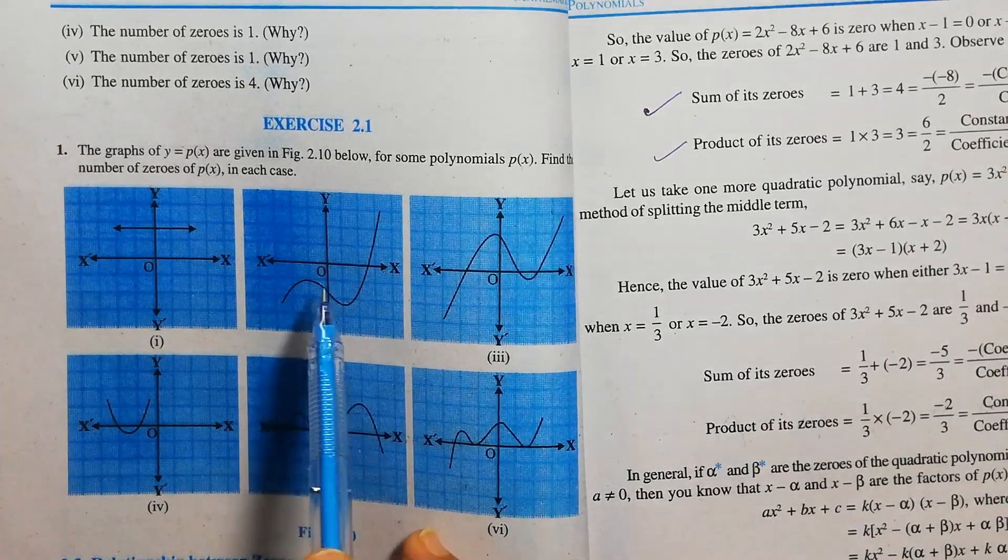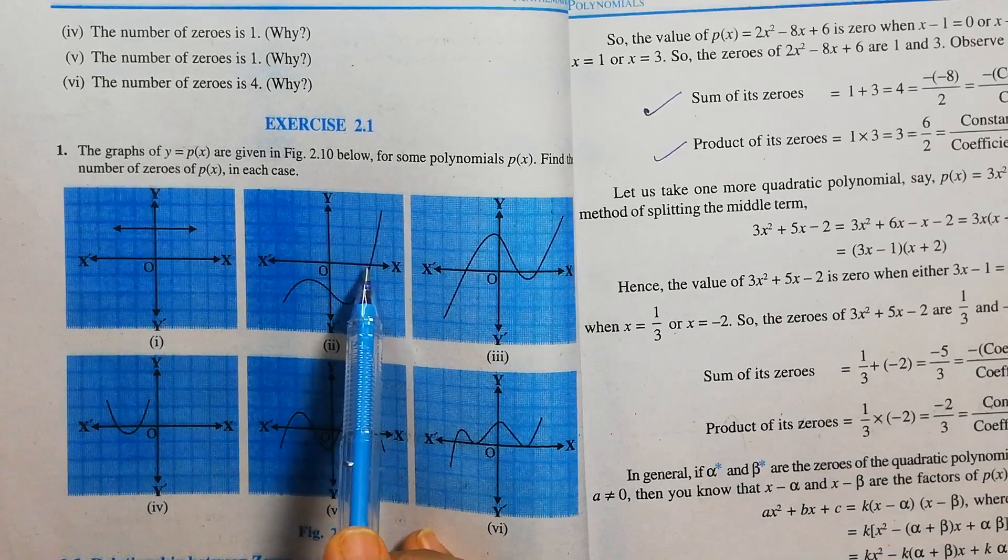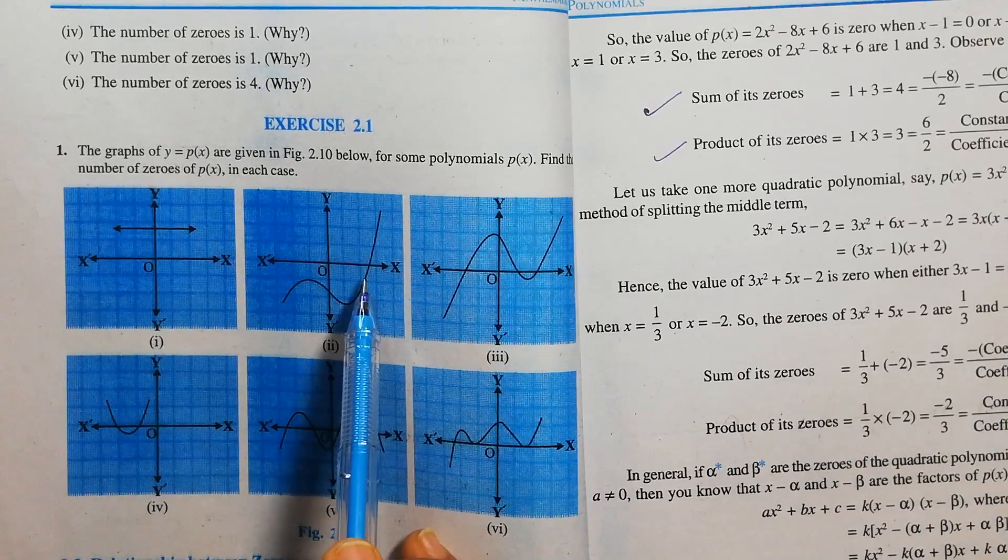Question number 2. Here we can see that the graph touches only one point on the x-axis. That means the number of zeros is 1.